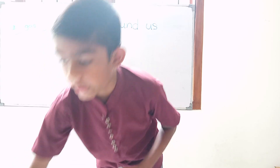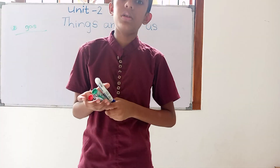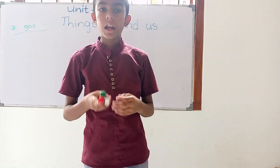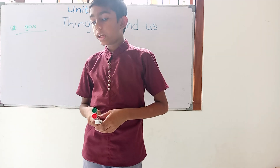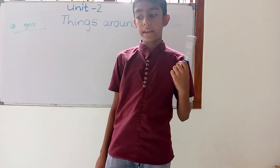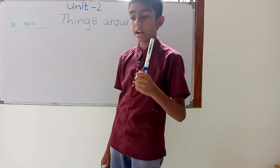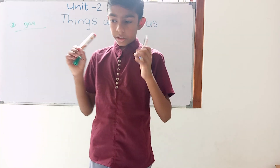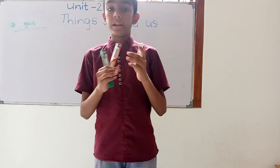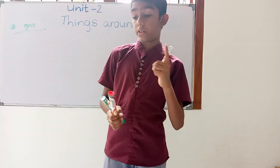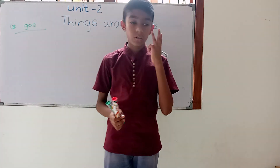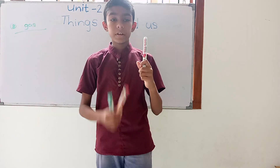Now we can do the table. When we talk about things around us, we can take this pen. Does this pen have a mass? Yes it does. Does it occupy space? Yes it does. That is how the table works. There are three columns: the first is things around us, then having a mass, and the third one is occupying space. Now we have concluded the pen.